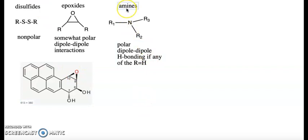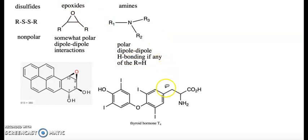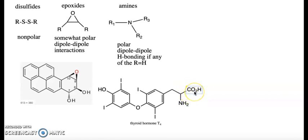Amines have a general structure where nitrogen is in the middle surrounded by three R groups — none of which are carbonyls; they're all alkyl groups or hydrogens. They're polar molecules with dipole-dipole interactions, since nitrogen is more electronegative than the carbons it's attached to, and if any R groups are H, it can also undergo hydrogen bonding. A good example is the thyroid hormone T4, which has an NH2 primary amine. Many molecules, like T4, contain multiple functional groups — it could also serve as an example of an ether, alcohol, alkyl halide, or carboxylic acid.